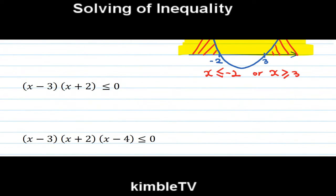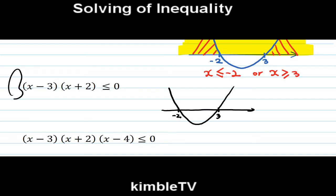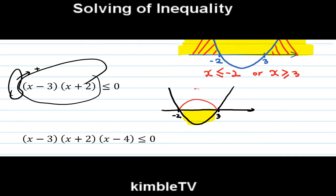The next question. On the number line, the roots are again minus 2 and 3 — the same curve, because this sign is positive. But now the Y value must be less than or equal to 0 — negative. Therefore X is greater than minus 2 and less than 3. This is the answer.